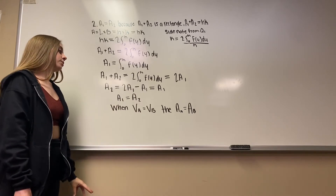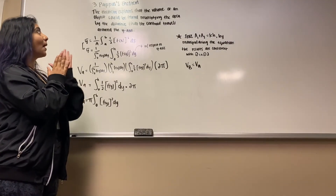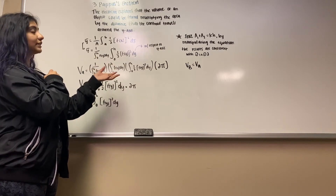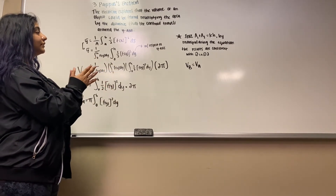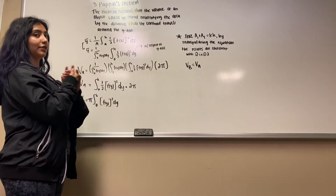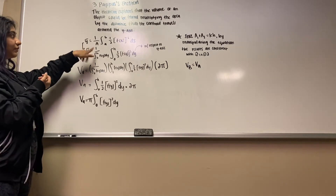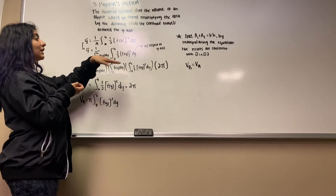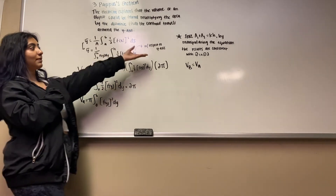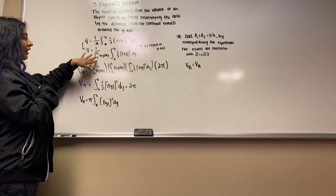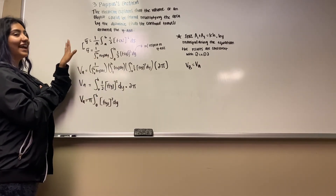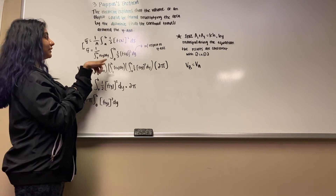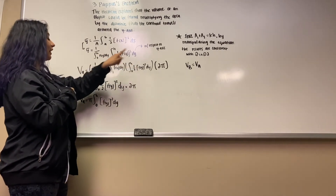For question 3, we used Pappus' theorem to explain how we found the volume for cups A and B. Pappus' theorem says that to find the volume of an object — in our case, the coffee cups — we multiply the area by the distance the centroid travels around the y-axis. Our centroid equation is y-bar equals 1 over the area times the integral from A to B of one-half f(x) squared dx. Since we needed the equation with respect to the y-axis, y-bar equals 1 over the area times the integral from 0 to H of one-half f(y) squared dy.